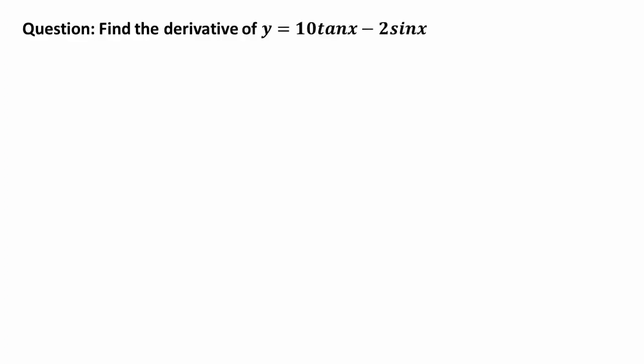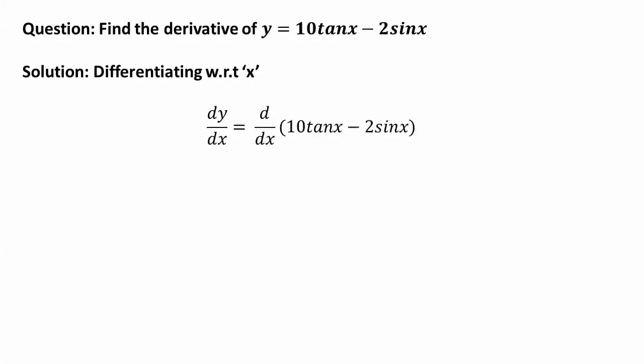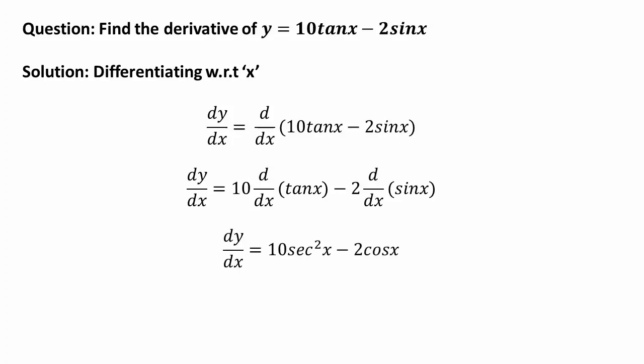Find the derivative of y = 10tan(x) - 2sin(x). Differentiating with respect to x: dy/dx = 10 · d/dx(tan x) - 2 · d/dx(sin x). The derivative of tan(x) is sec²(x) and the derivative of sin(x) is cos(x). So dy/dx = 10sec²(x) - 2cos(x).